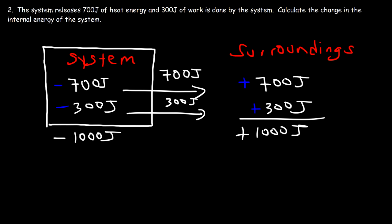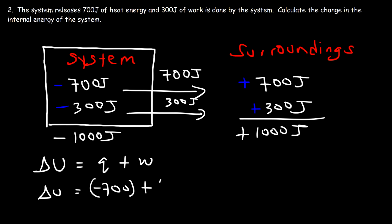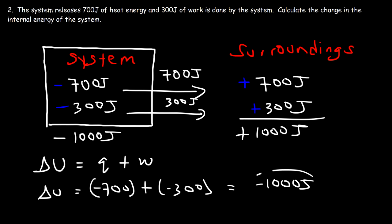This illustrates the first law of thermodynamics — energy is not created or destroyed, simply transferred from one place to another. Delta U = Q + W = negative 700 plus negative 300, so the change in internal energy of the system is negative 1000 joules. The system loses 1000 joules and the surroundings gain 1000 joules.